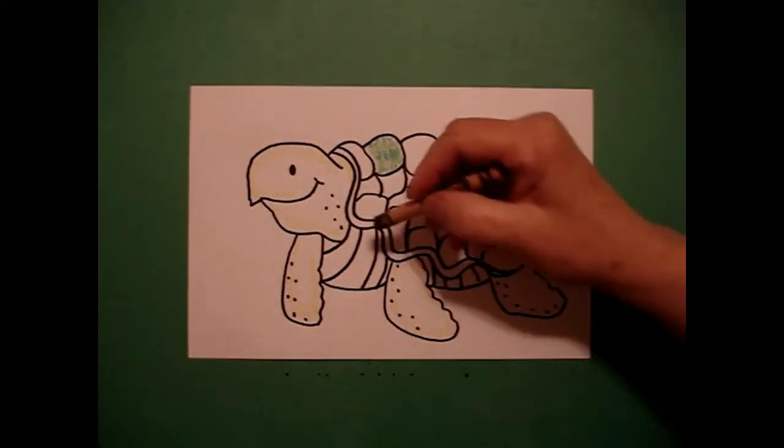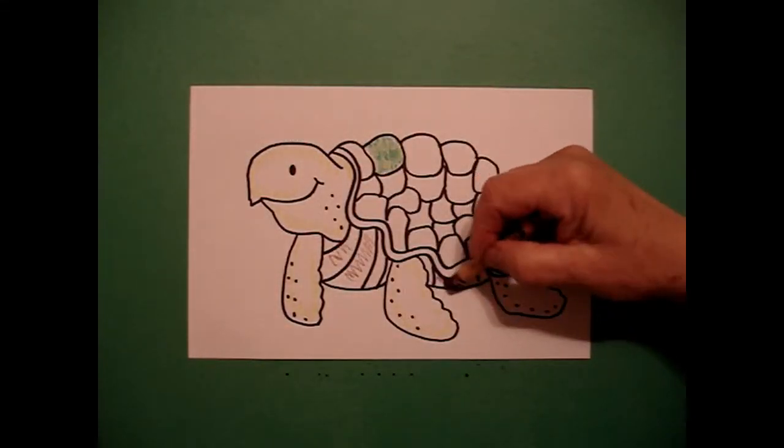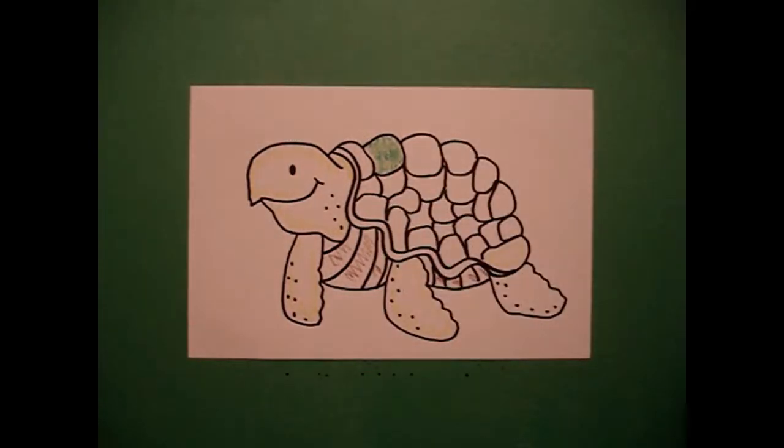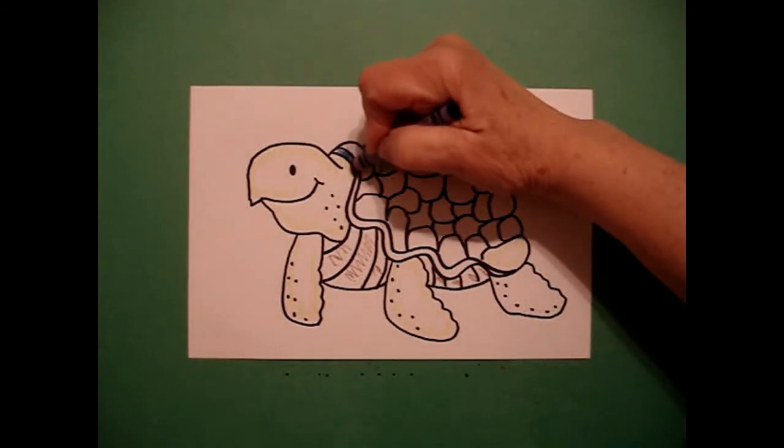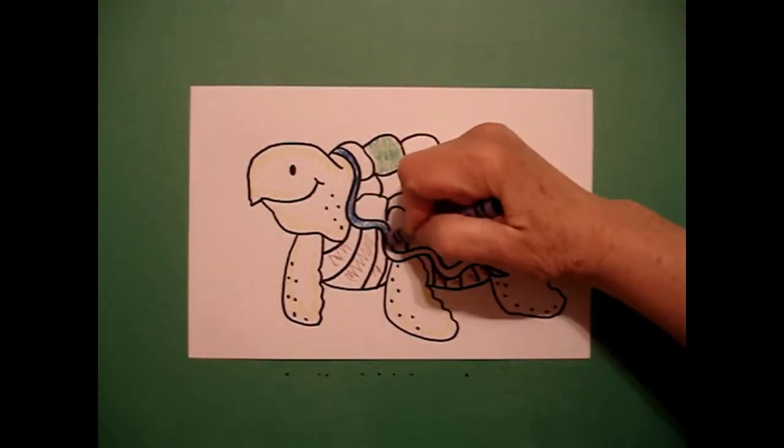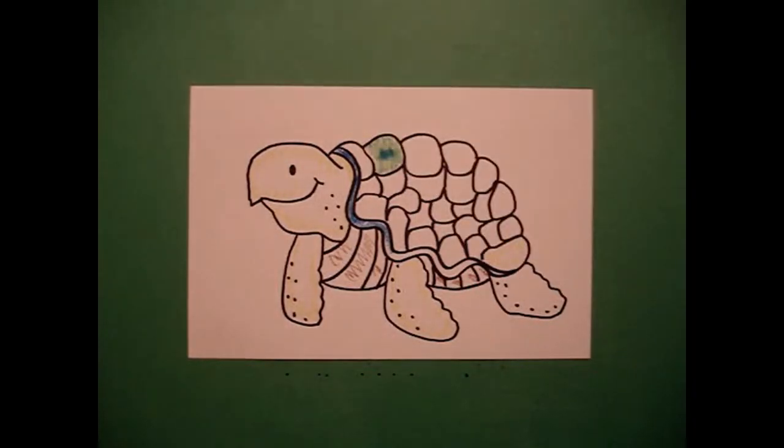I'm going to take brown and color lightly in his tummy. That's this section back here also. And once I get that done, I'm going to add a dark blue line on this part of his shell. And I'm going to come back in on every section of the shell, I'm going to put a little blue dot.